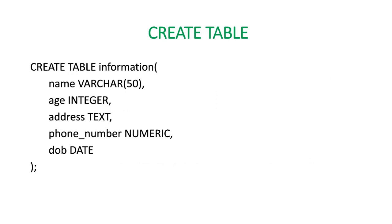This is how the table is going to be created. We use CREATE TABLE, then define data types for each column. I have a table named 'information' with columns: name, age, address, phone number and date of birth. Name is going to be varchar(50), which means the name length is not going to be more than 50 characters. Age is going to use integer, address will use the text data type, phone number will use numeric, and date of birth will use date.